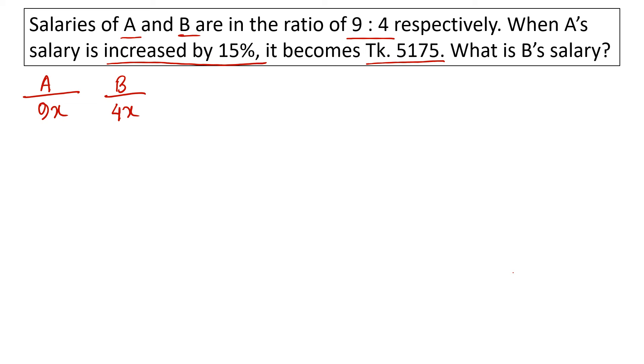A's salary is increased by 15%. So if you have 9x plus 15% more salary, it becomes 115%. A's salary, 9x times 115%, is 5,175. So 9x times 115 by 100 equals 5,175. A's salary is 5,175, so let's calculate.